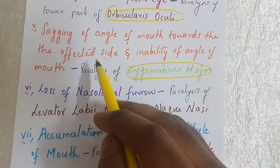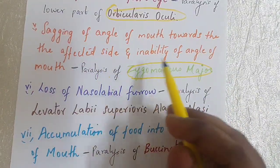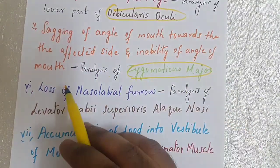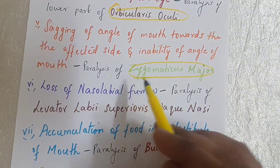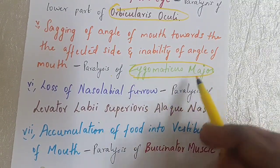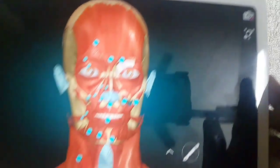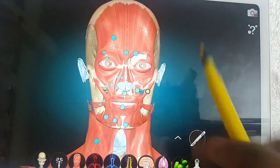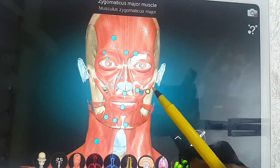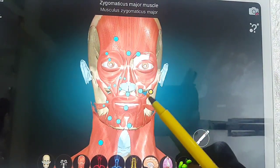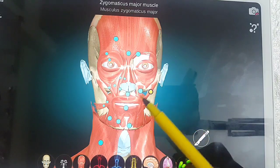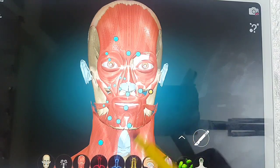The fifth point is sagging of the angle of the mouth toward the affected side and inability to close the mouth at that angle. This is caused by paralysis of the zygomaticus major muscle. In 3D anatomy, we can see the zygomaticus major muscle — because of its paralysis, there is sagging of the mouth.